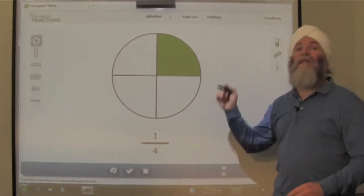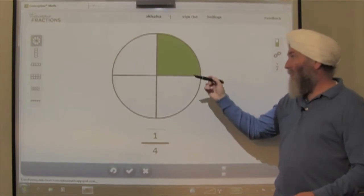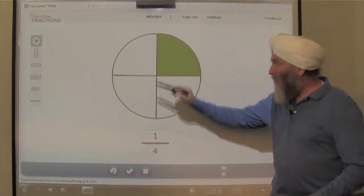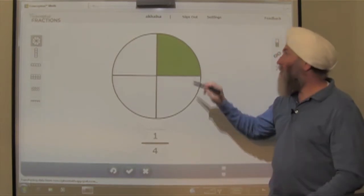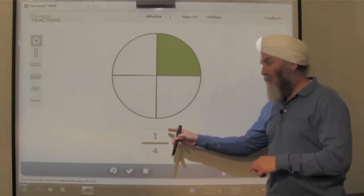And what does numerator mean? Well, the number of parts that we're talking about. So here we have four equal parts. And how many shaded parts? That's the number, the numerator. One shaded part, the numerator is one.